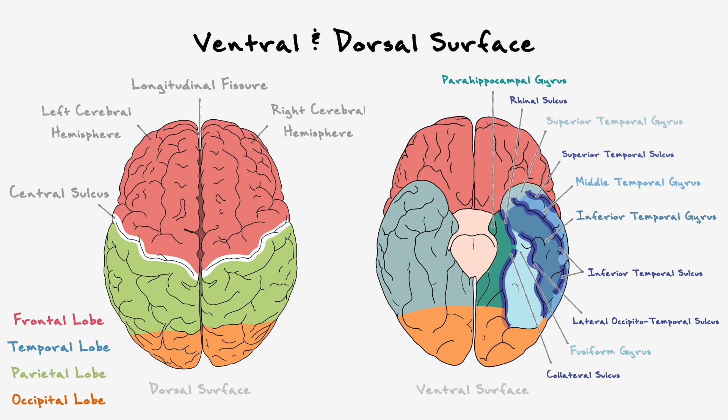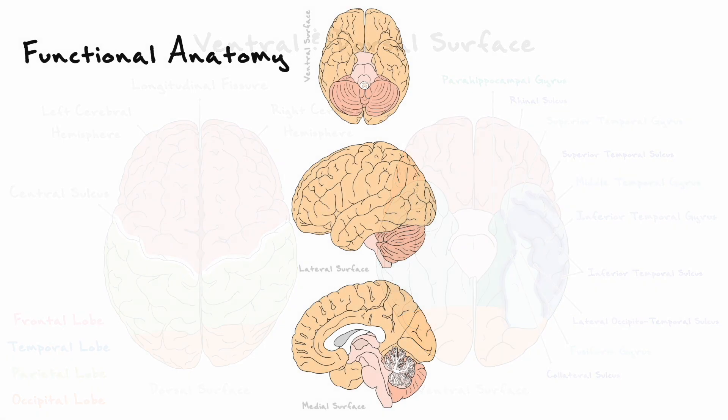Up until now, we have talked a lot about the landmarks of the brain, but not so much about what actually happens within or around them. It turns out that to process the world around us and ourselves, the brain is divided into distinct functional regions that sometimes process very specialized bits of information, or sometimes integrate information from different areas to create complex cognitive functions. What I want to do now, now that we have surveyed the different sulci and gyri, is to go over the most notable functional units of the brain and very briefly discuss what they do to get an idea of how the brain is organized.